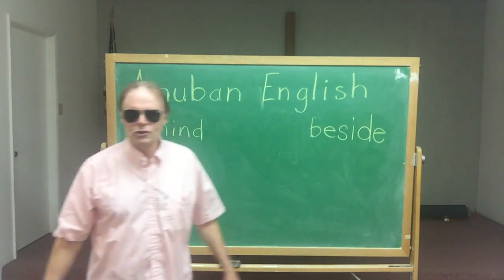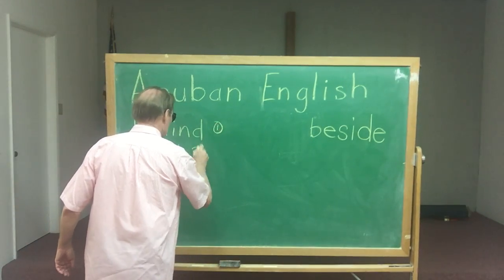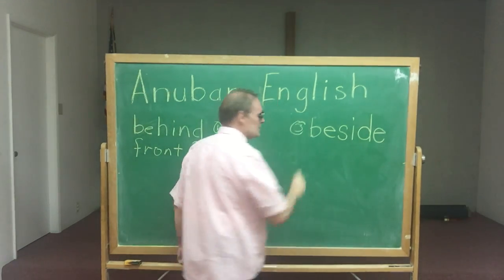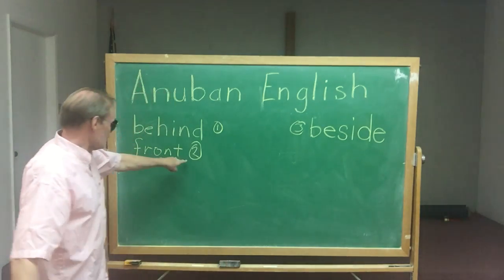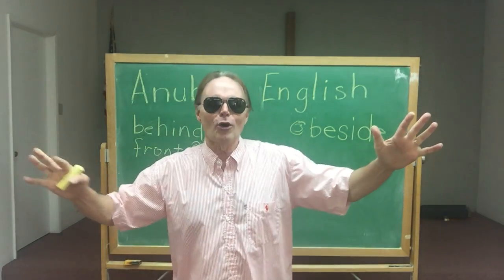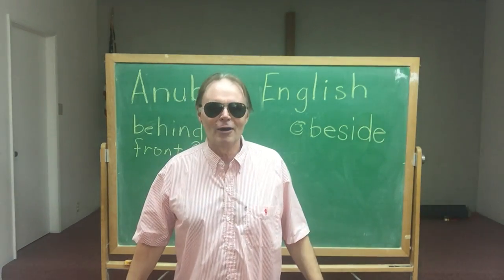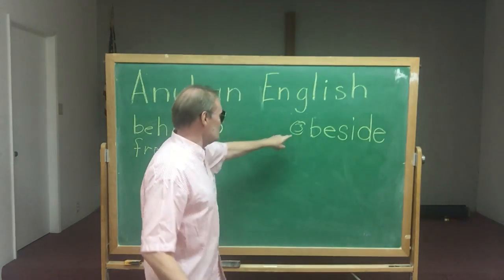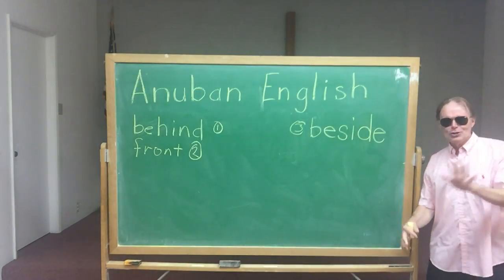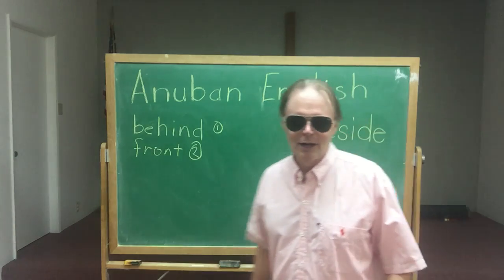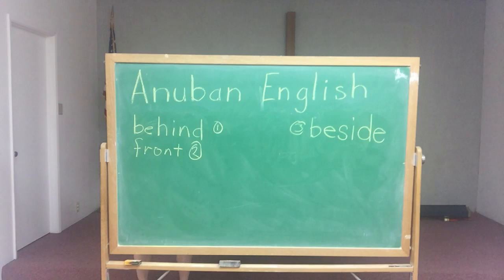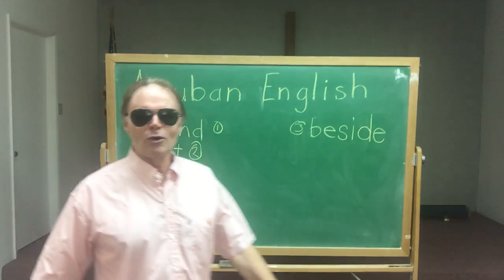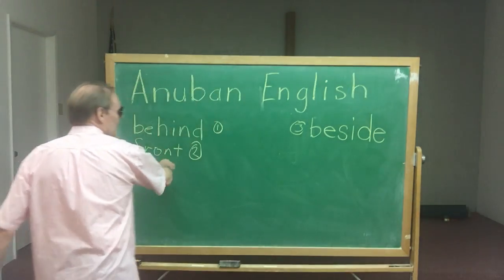So which one should I do first? Number one: behind. Number two: in front. Or number three: beside. Which one should I do? Two! Okay, two is in front. I'm in front of the board. Now which one? Three! Number three is beside. I'm beside the board. Now which one should we do? Behind! Number one. I'm behind the board. Can you see me? No. Can you see me now? Oh, here I am! So there's our picture of behind, in front, and beside.